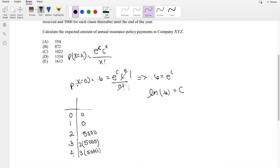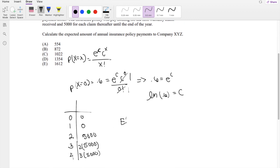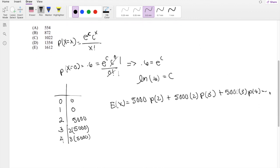You're paying for 2, 3, and 4. So the expected amount would be equal to $5,000 times the probability of 2 plus $5,000 times 2 times the probability of 3 plus $5,000 times 3 times the probability of 4 and so on.